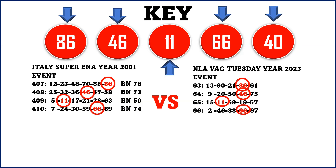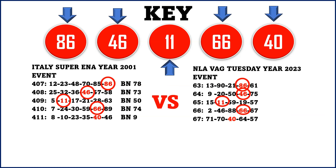The next sequence number is 40. For Super Enalotto results number 411, the numbers drawn were 8, 10, 23, 35, 40, and 60, with 46 also dropped and BN 9. For the NLA we have results number 67 where 71, 70, 40, 64, and 57 dropped. Both results produce 40, completing the key sequence.